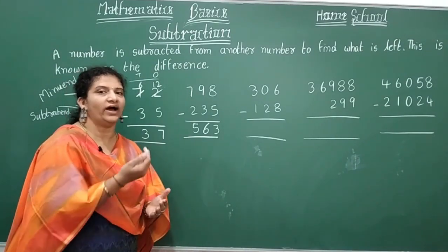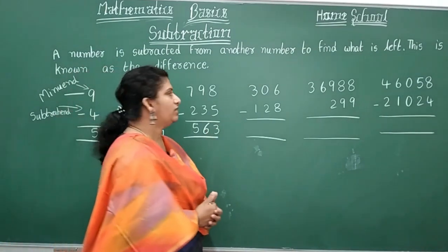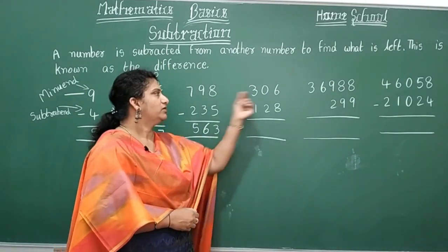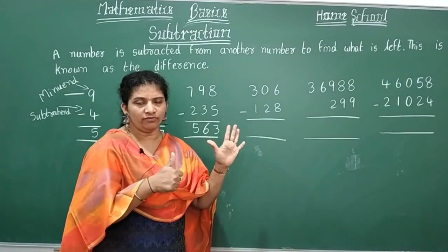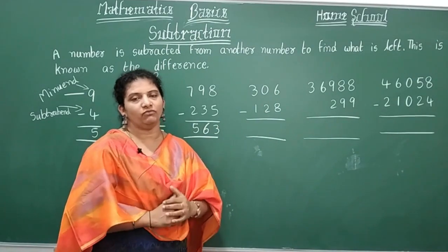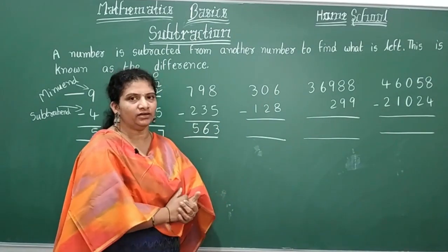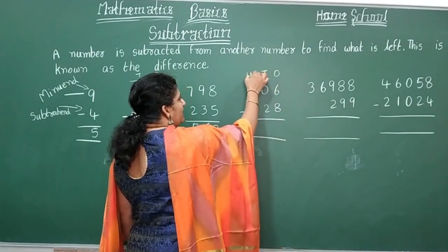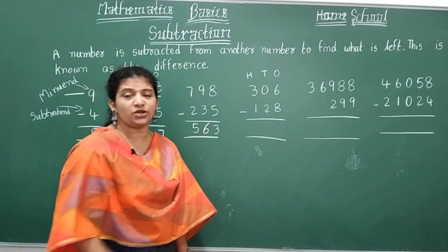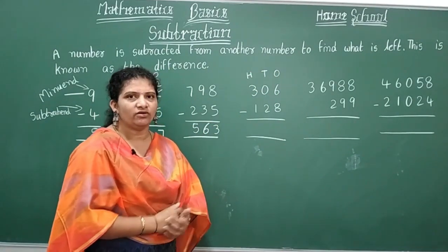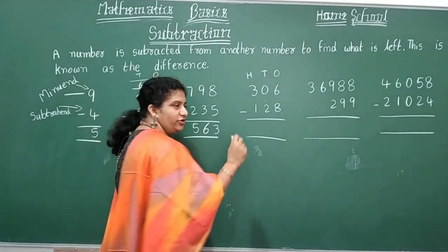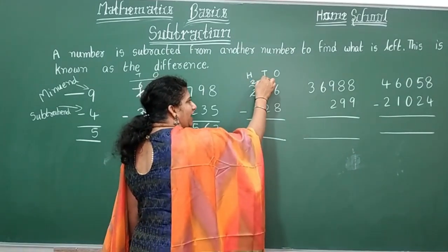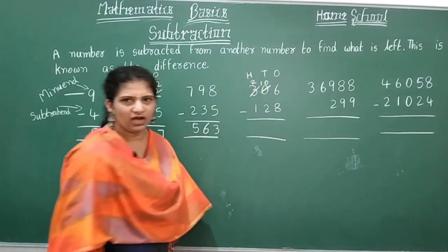Now let's look at 306 minus 128. In the ones place: can you subtract eight from six? No. So you need to borrow. But the tens place has zero — you cannot borrow from zero. So you must jump to the hundreds place and borrow from there. The hundreds digit three becomes two, and carry that one to the tens place, making it ten.